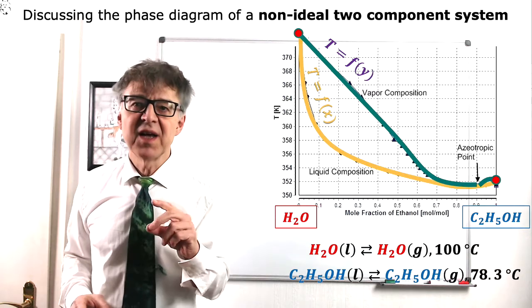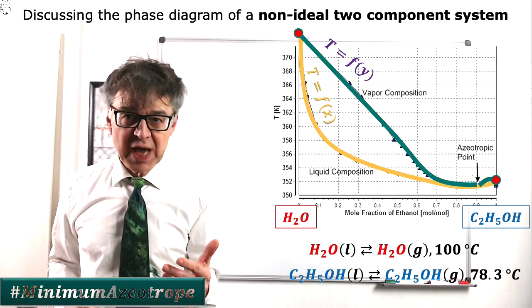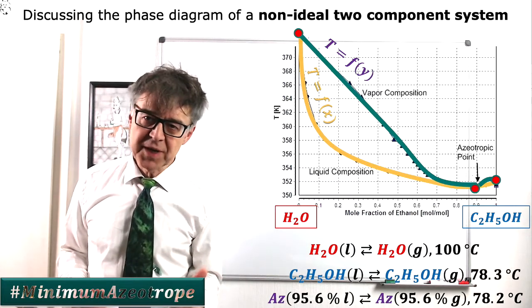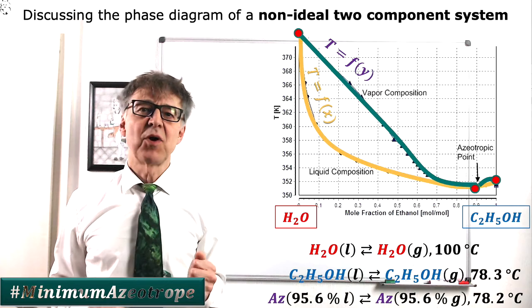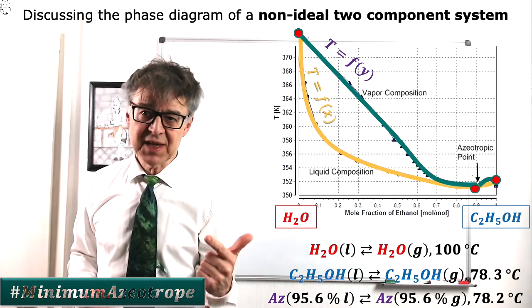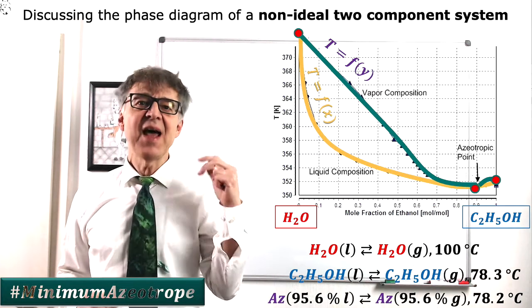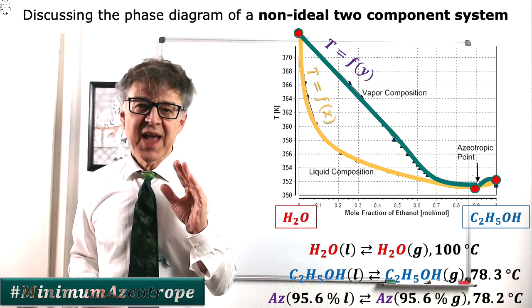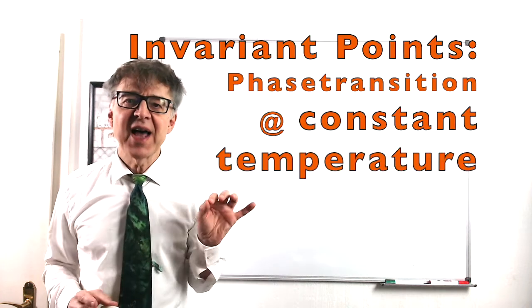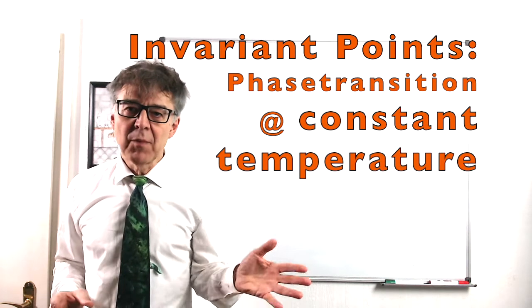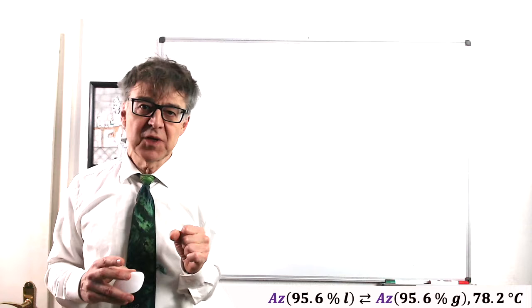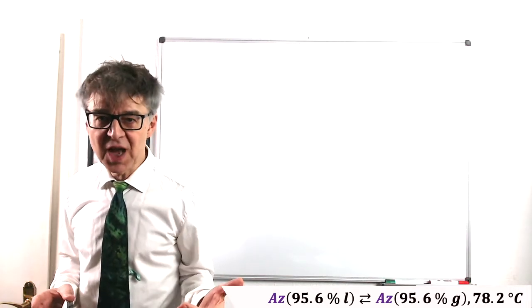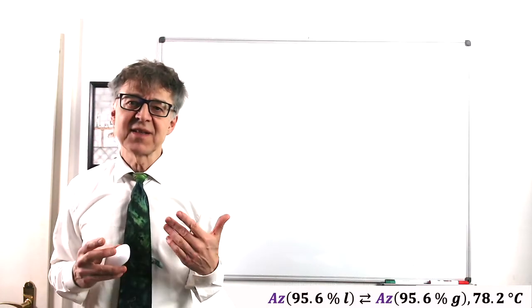This minimum is called an azeotrope. So we have in fact three invariant points in this diagram: the boiling point of pure water at constant 100 degrees Celsius, the boiling point of pure ethanol at constant 78.3 degrees Celsius, and the boiling point of the azeotrope at constant 78.2 degrees Celsius. At invariant points, phase transitions occur at a constant temperature. Moreover, the compositions of both phases at equilibrium are the same. Thus, an azeotrope is a constant boiling point mixture and boils and condenses like a pure substance.